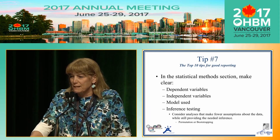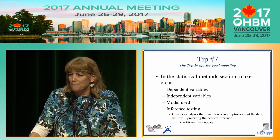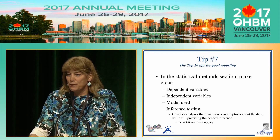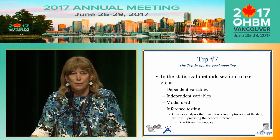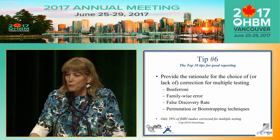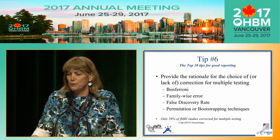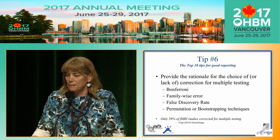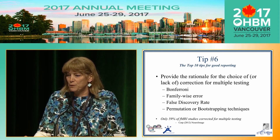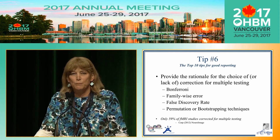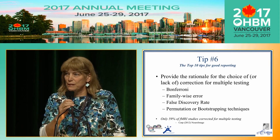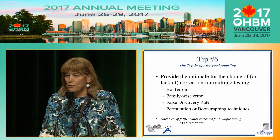Tip number seven: in the statistical models and methods, make clear what your variables are — dependent, independent models, inference testing. Consider analyses that make fewer assumptions about the data while still providing the needed inference, such as bootstrapping and permutation methods. Provide the rationale for the choice or lack of multiple testing correction. There was a paper in 2012 showing only 59% of fMRI studies corrected for multiple testing. One of the key points of the COBITIS document is that you need to account for multiple testing and describe the rationale for that.